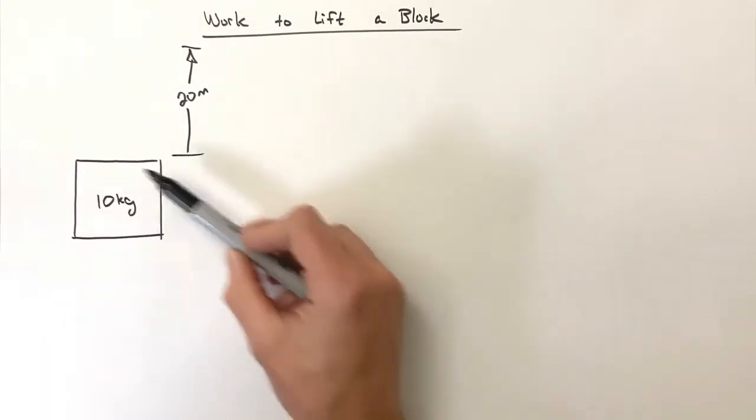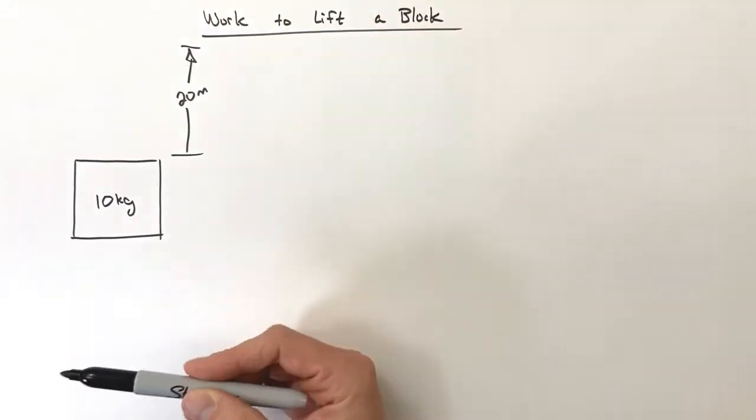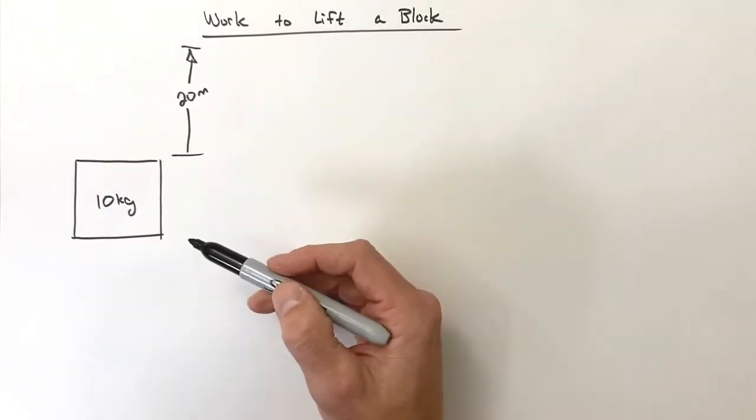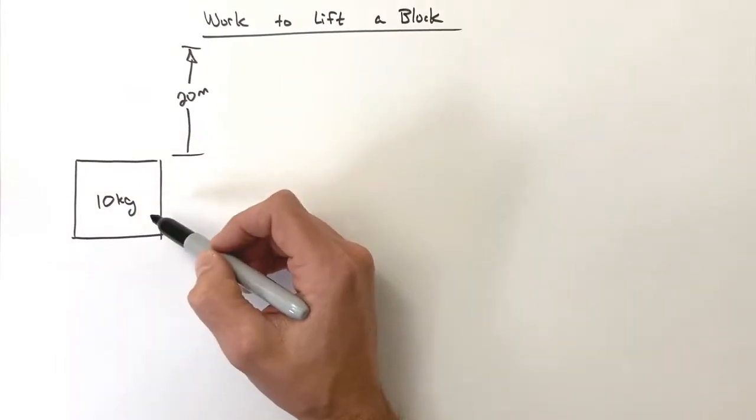Okay, what we're going to do in this problem is take a 10 kilogram block that we've been dealing with and we're going to lift the block 20 meters. In this problem we're going to solve for the total work done on the block as well as the work done by each individual force acting on the block.